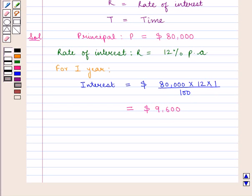Now, the tax on $9,600 will be equal to 20% of $9,600, which equals $1,920.